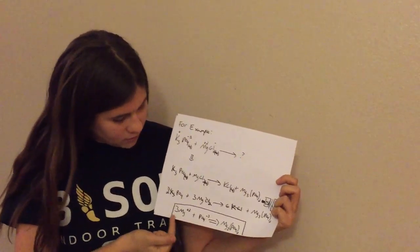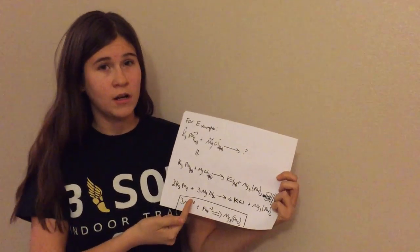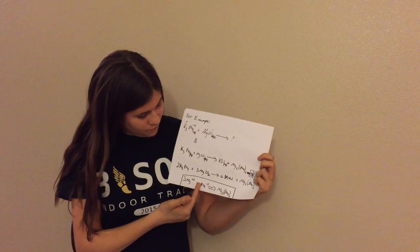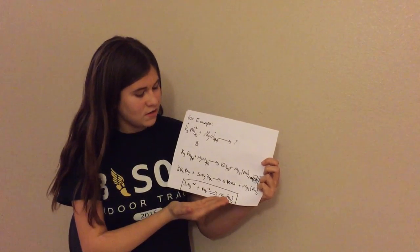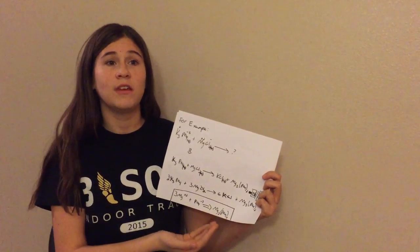Our end product turns out to be three magnesiums at plus two charge and phosphate at minus three charge, which gives us magnesium₃(phosphate)₂. Thank you for watching my presentation.